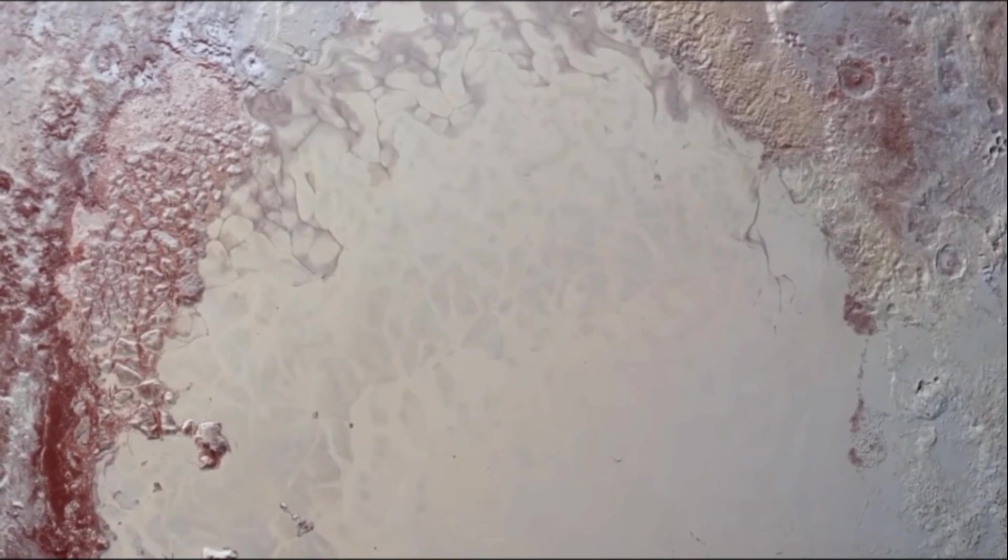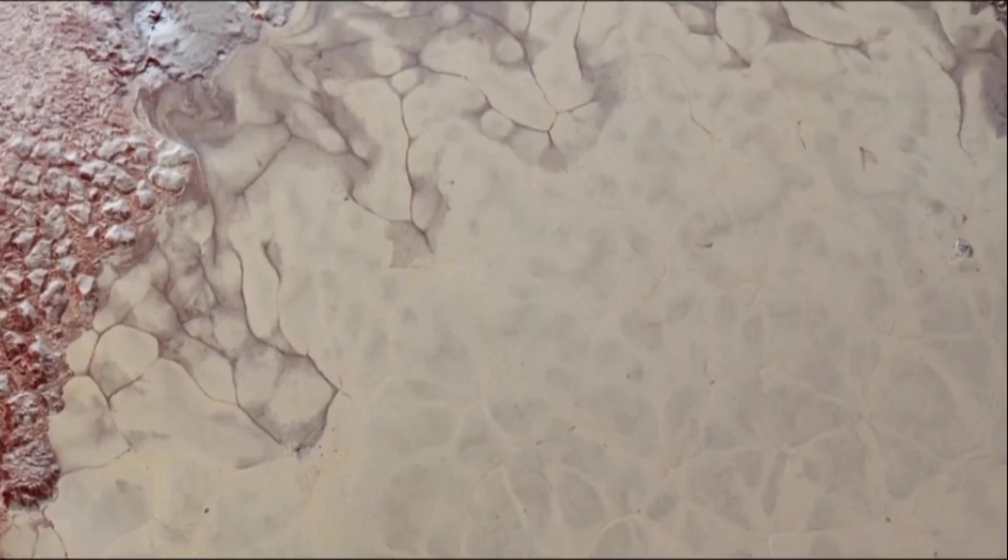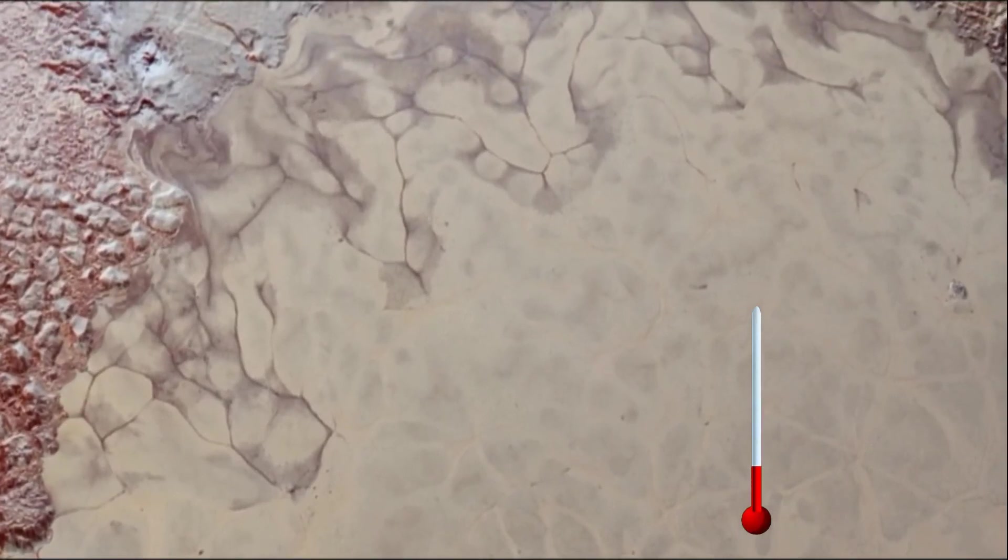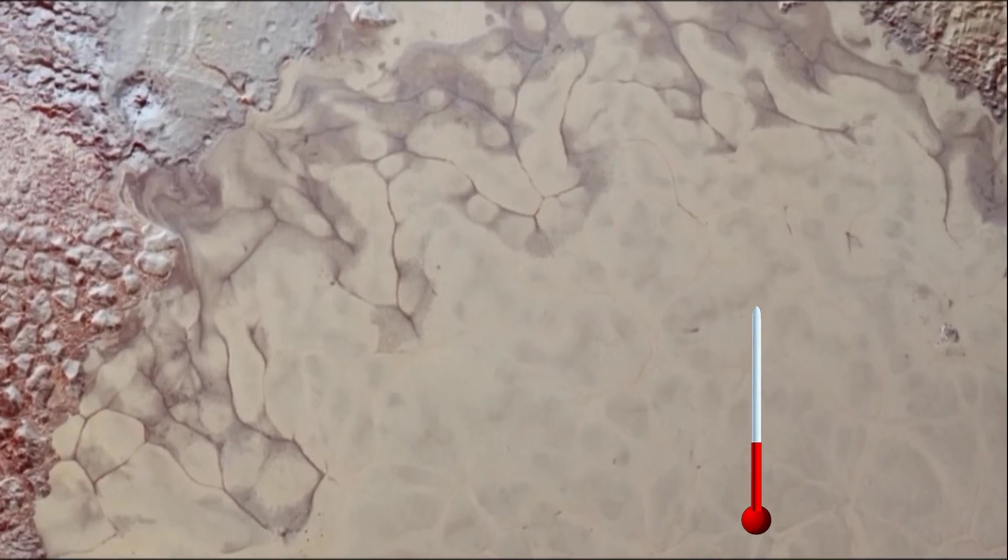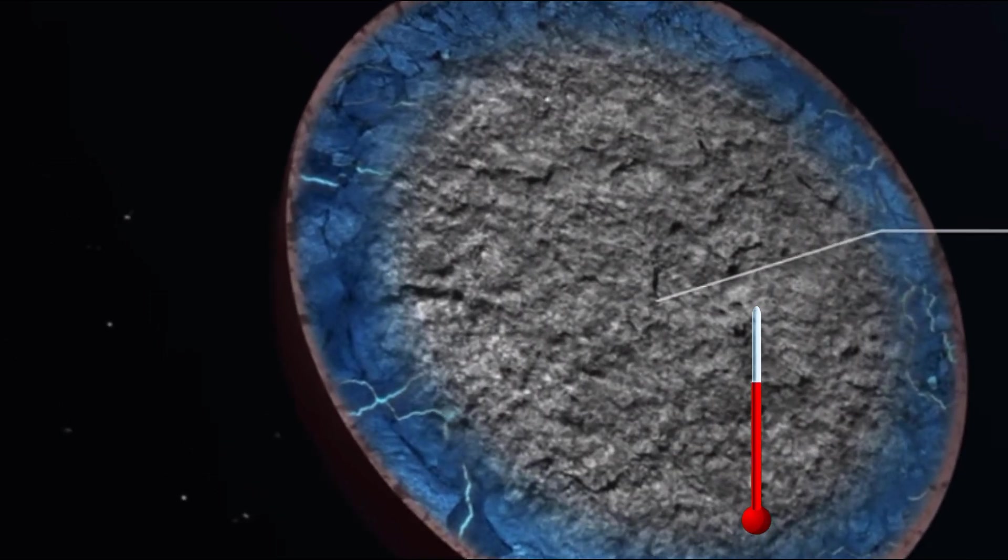Creating such a landscape required numerous eruptions and huge volumes of icy material. The absence of impact craters underscores the youth and activity of this region. This discovery also suggests that Pluto's internal structure either effectively retains heat or its depths are warmer than previously thought, contributing to cryovolcanic activity.